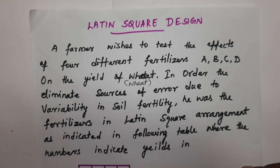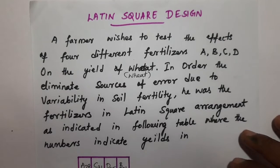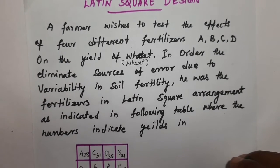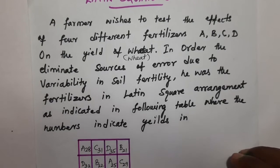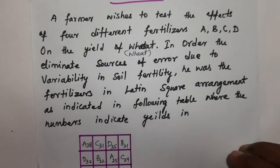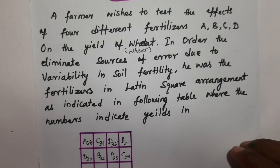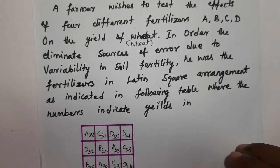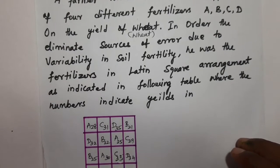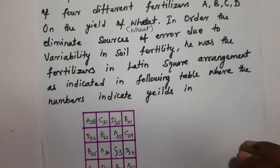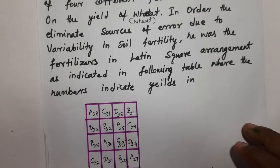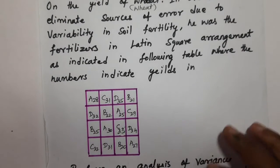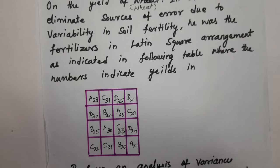Latin square design. A farmer wishes to test the effect of four different fertilizers A, B, C, D on the yields of wheat. In order to eliminate sources of error due to variability in soil, the fertilizers are arranged in a Latin square arrangement as indicated in the following table.